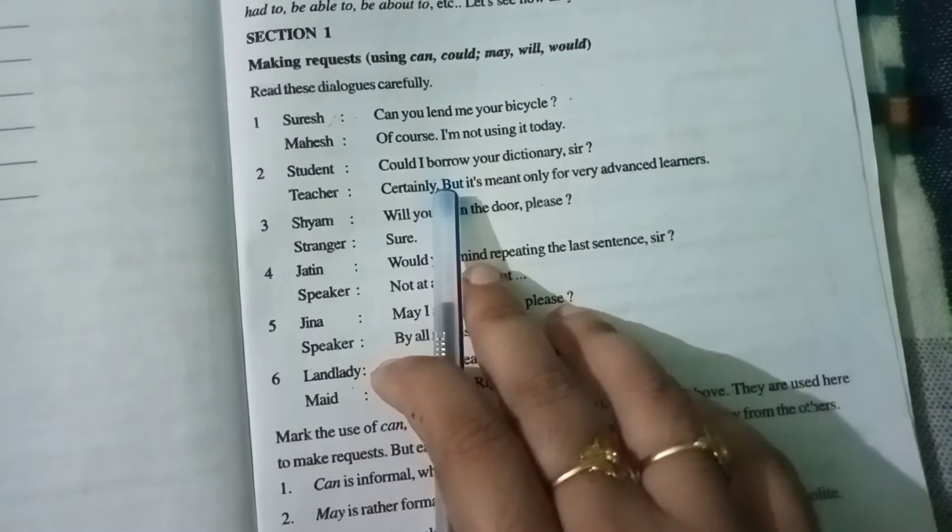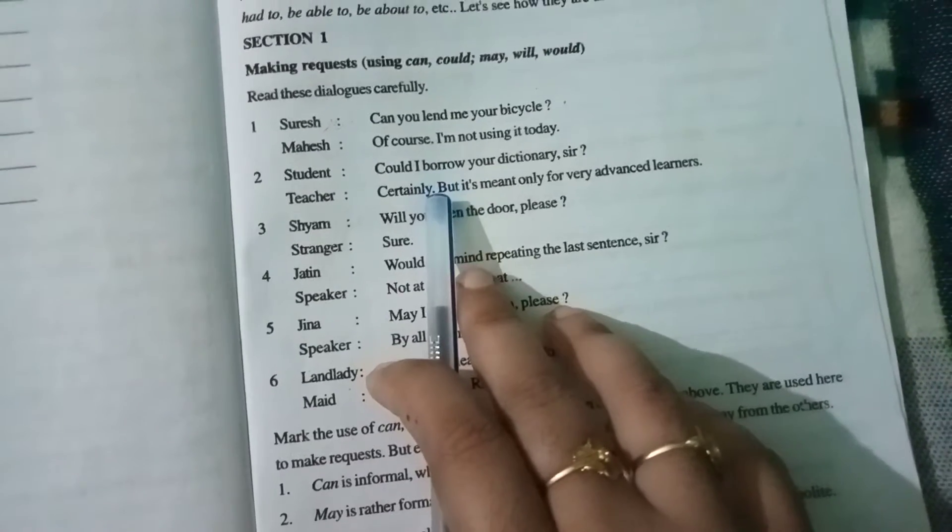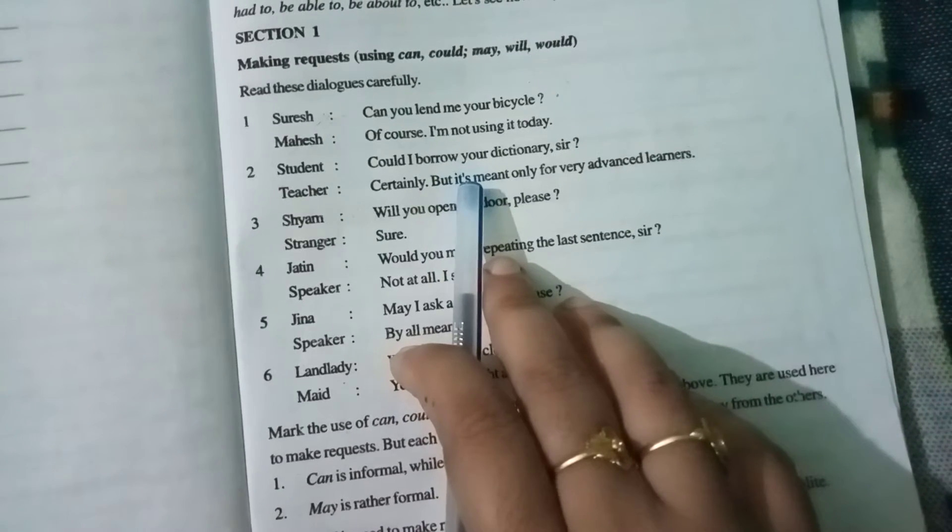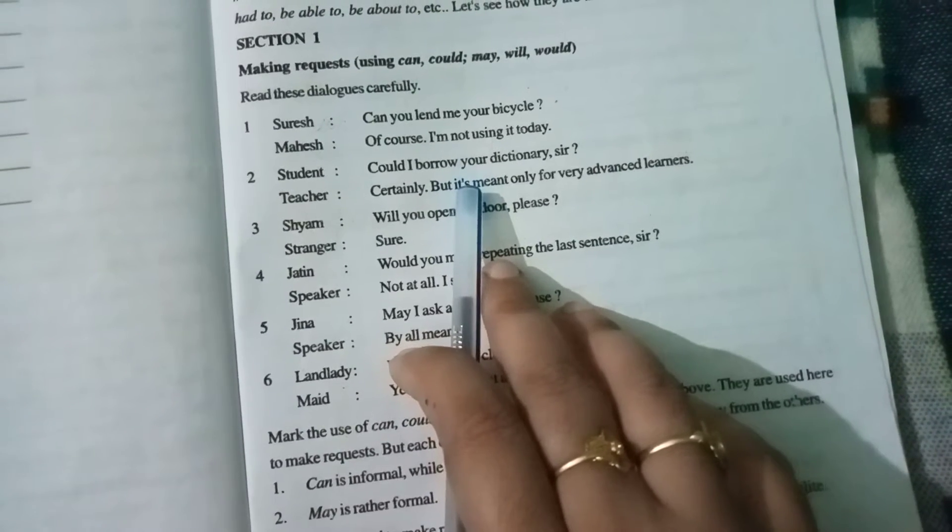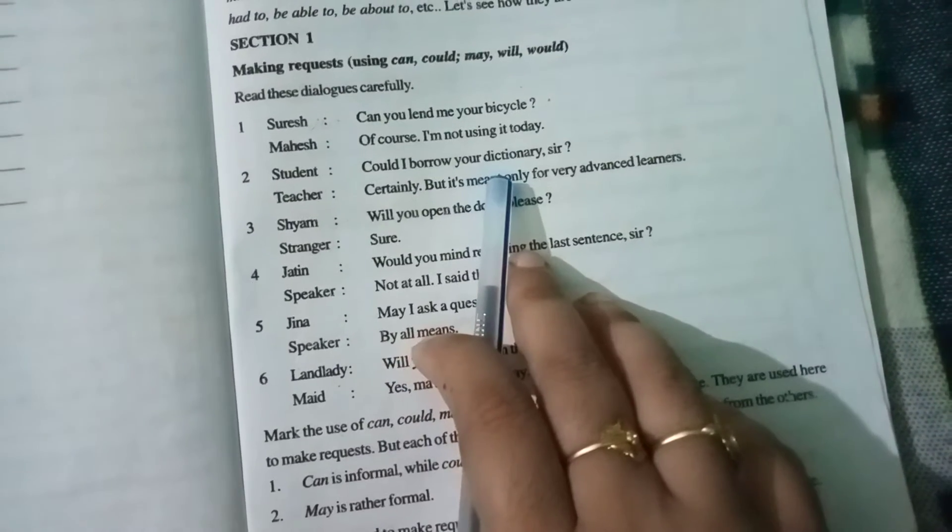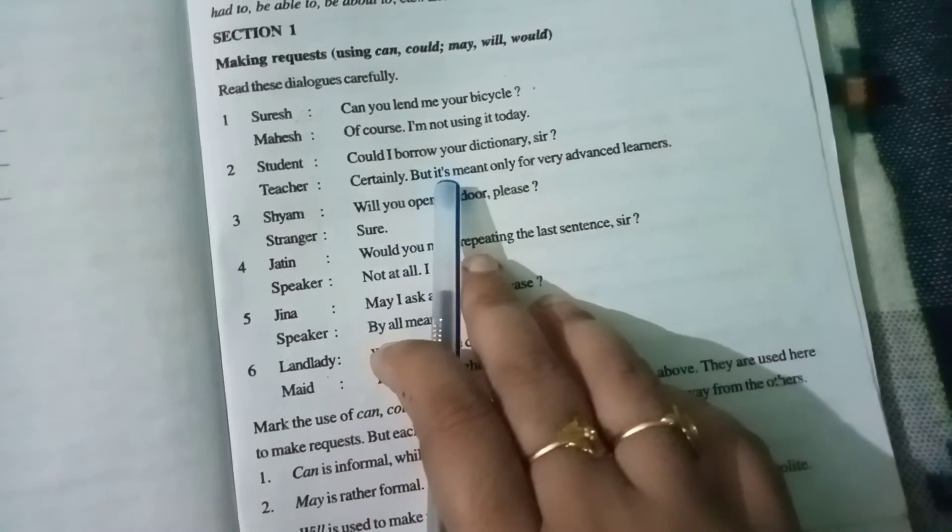So here could is used to request in formal situations. It should be used when we have to maintain some formality when we are making requests to some elderly persons, dignitaries, or respectable persons. At that time we must use could when we are making a request.